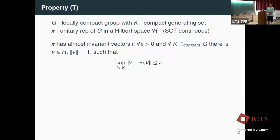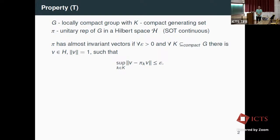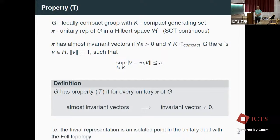Let's recall the definition. This is the standard definition of Property T. We have a locally compact group with a compact generating set, and we define almost invariant vectors as vectors satisfying an almost invariance condition on the generating set. Property T says that if every unitary representation of G has almost invariant vectors, it has a non-trivial invariant vector.